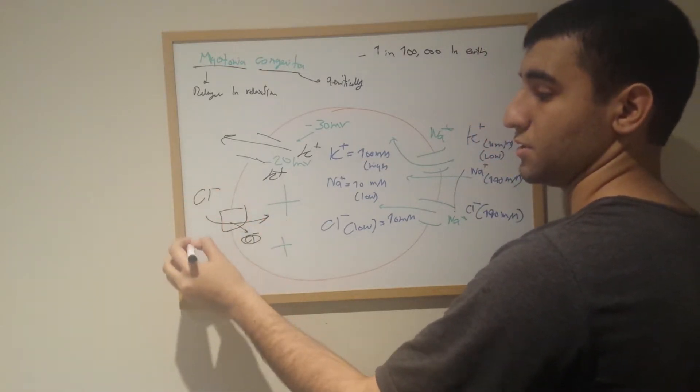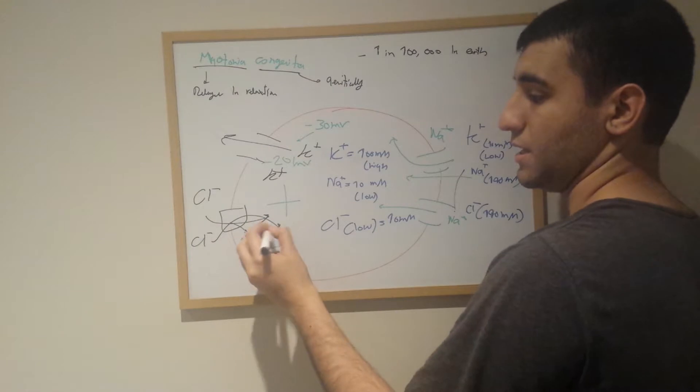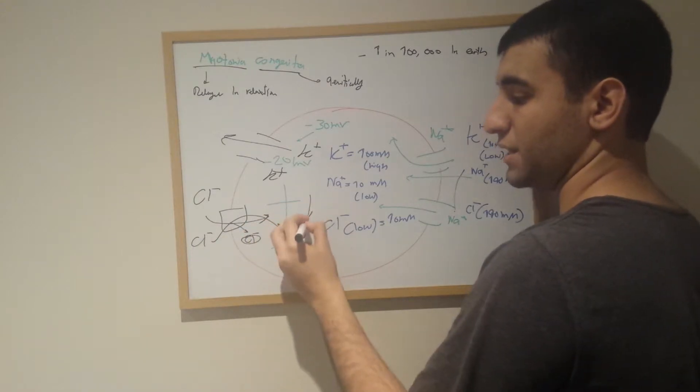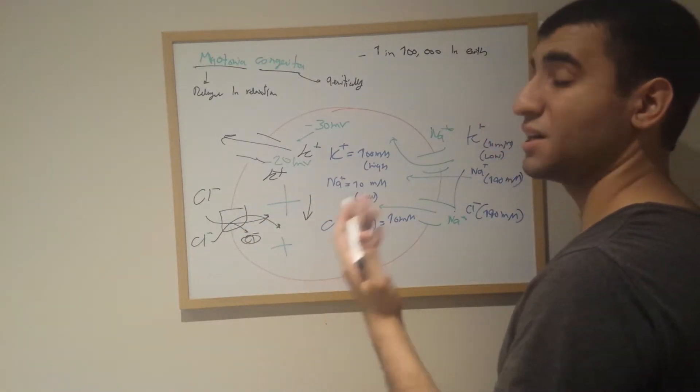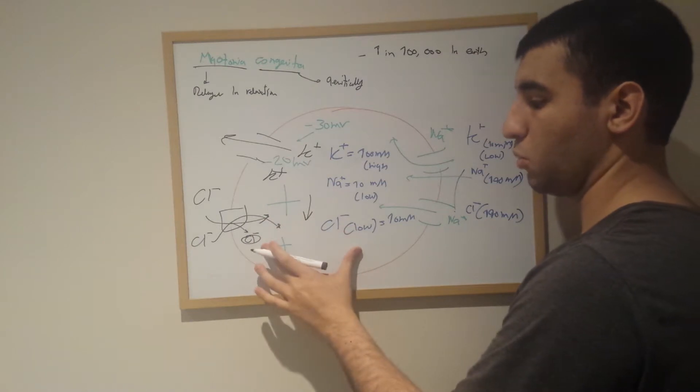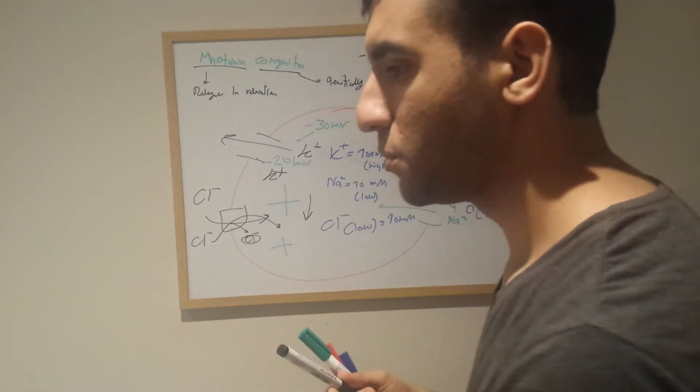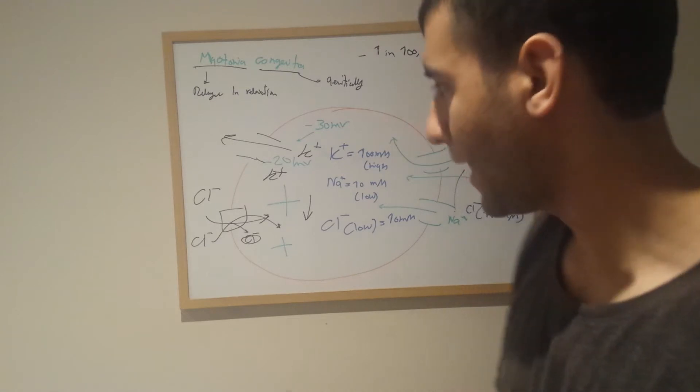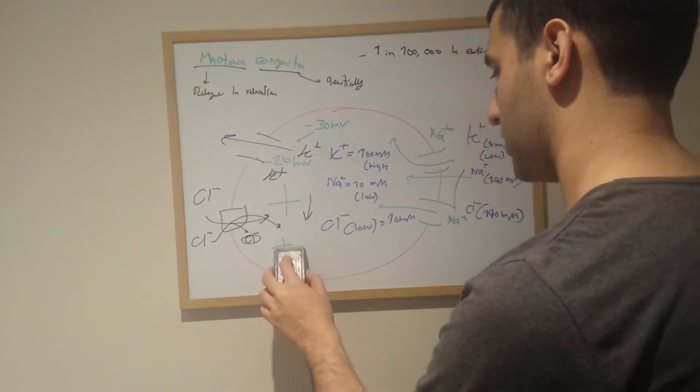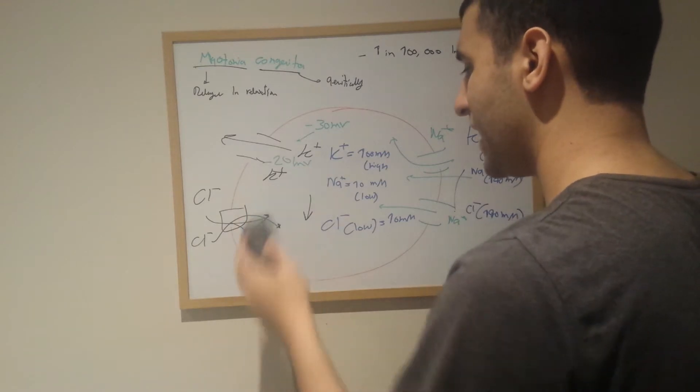This Cl- channel essentially allows the Cl- to come in. This Cl- would bring down the depolarization and increase the polarization, making it more polarized and essentially allowing the cell to rest. You're essentially making the cell able to rest more clearly and hence making the cell go back to its resting potential.